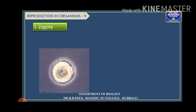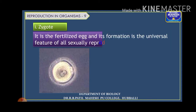The zygote is nothing but the fertilized egg itself — the diploid cell formed after the process of syngamy, after the fusion of gametes. It is the first cell formed. All sexually reproducing organisms produce the zygote. The zygote is said to be the vital link between one generation and the next, because it carries the characters of the parents to the next generation.